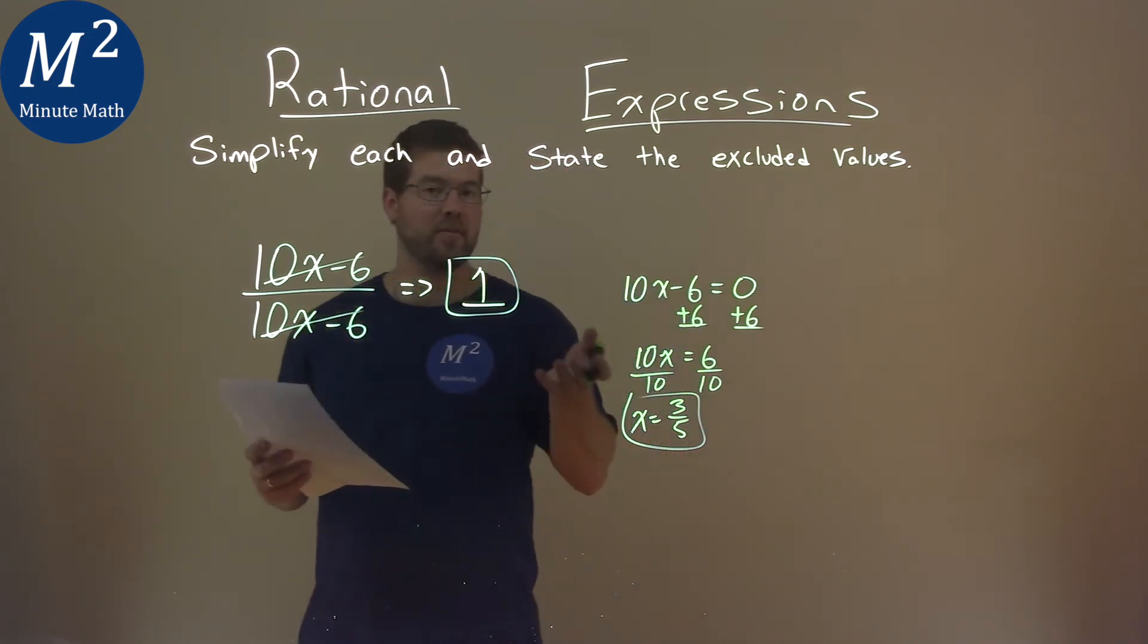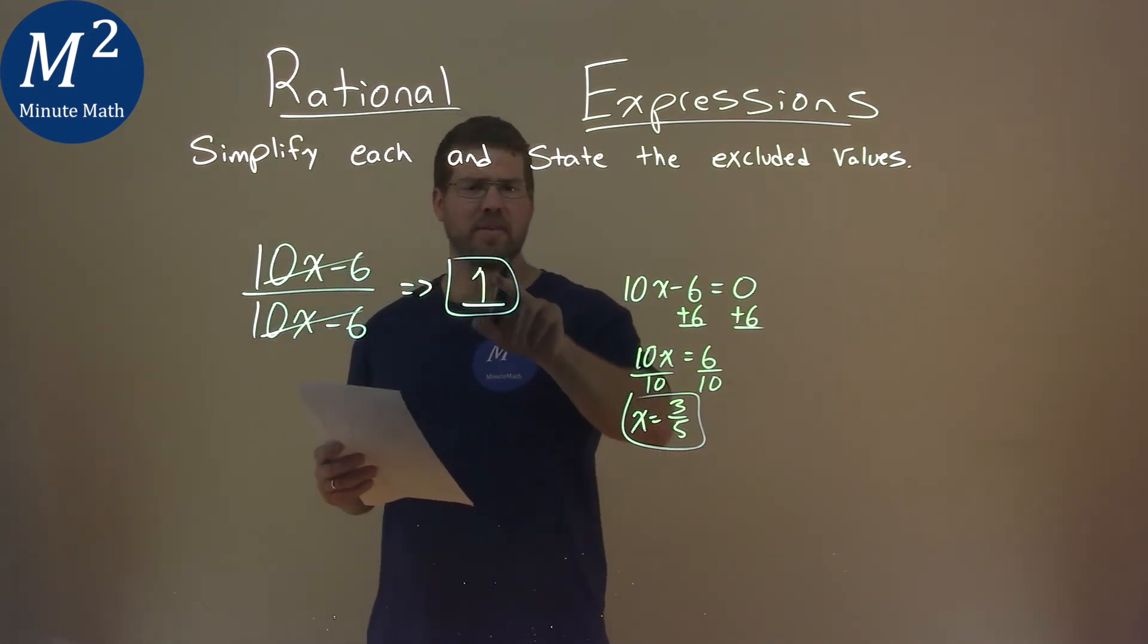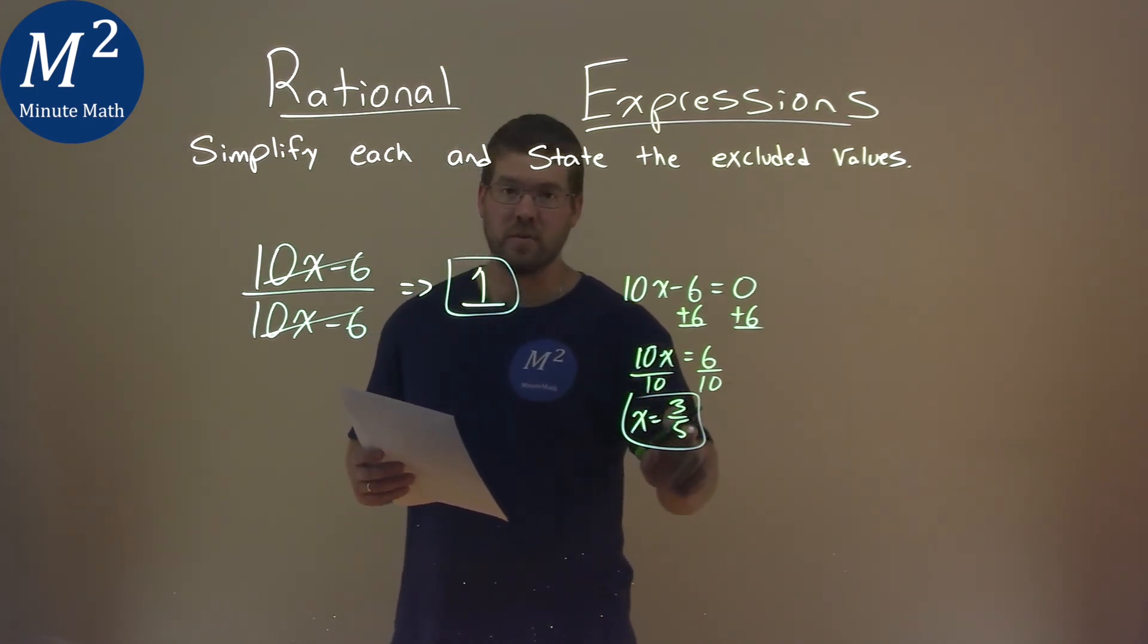And our simplified answer, again, is 1. So be careful. This is the simplified answer, and 3 fifths is our excluded value.